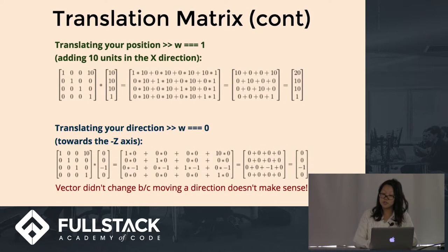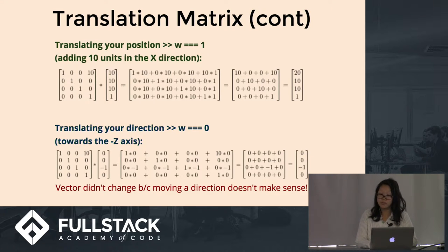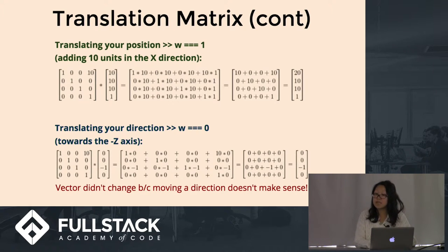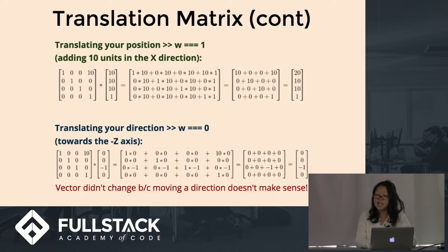Here are two examples. The first, in green, is translating the vector 10 units in the X direction — we start at (10, 10, 10, 1) and end up at (20, 10, 10, 1), where the 1 indicates we transformed a position. The second, in blue, takes that same matrix and multiplies it to a directional vector where W equals 0 — we start at (0, 0, -1, 0) and end up at the same vector, because moving a direction does not make sense.